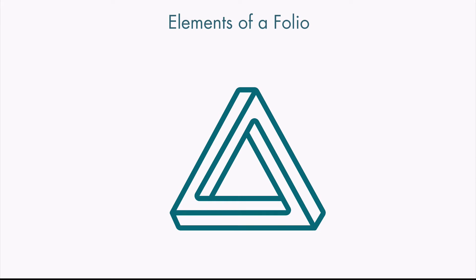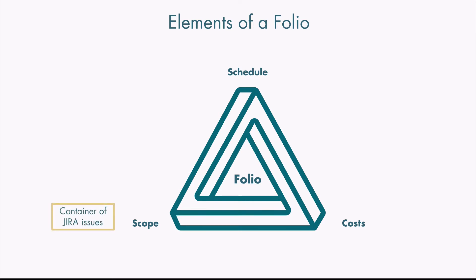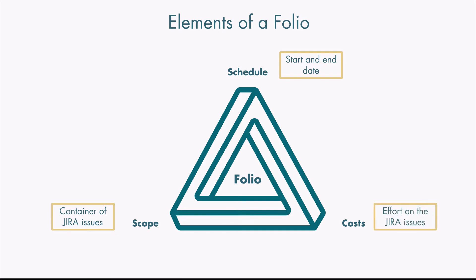The fundamentals of Tempo Budgets are folios. A folio in Tempo Budgets consists of three main parts: the schedule, the scope, and the costs of a folio. The scope of a folio is always a container of Jira issues, and these Jira issues can be defined by a Jira filter. Tempo Budgets will always create a Jira filter behind the scenes for you.